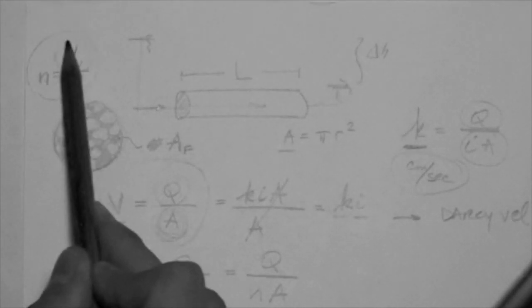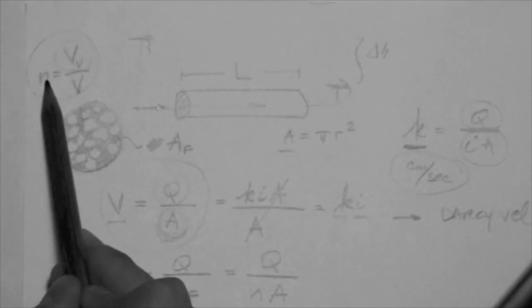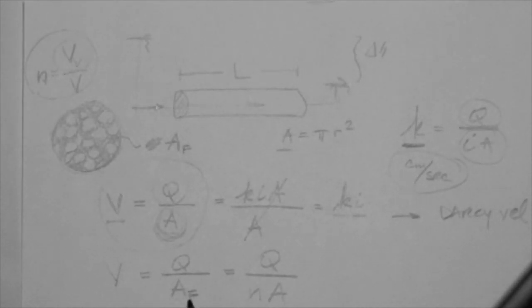The porosity times the total area, just like the porosity times the total volume, gives you the area of the voids. In this case, the volume of the voids, if you use this equation. So N times V is equal to V sub V. Same thing. N times A is equal to A sub F, or A sub V. We could call it A sub V, the area of the voids. I used F for flow.